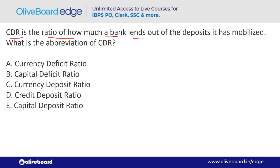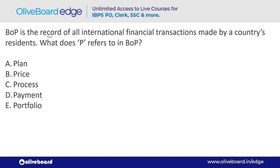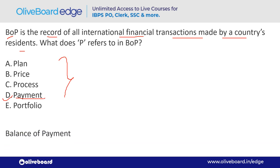CDR is the ratio of how much a bank lends out of the deposits it has mobilized. Also, all records are recorded in BOP. What does 'P' refer to in BOP? BOP is Balance of Payment — option D is the correct answer.